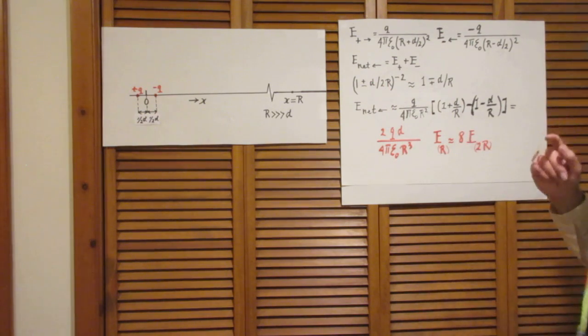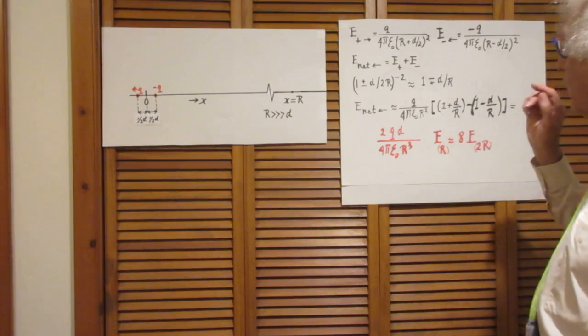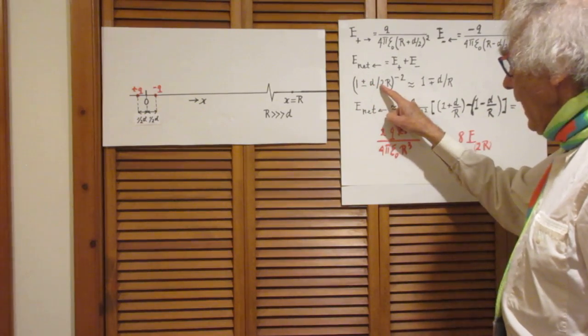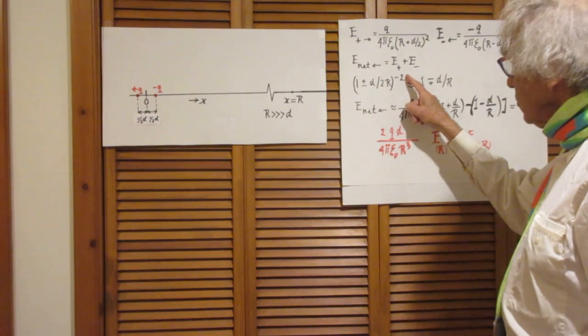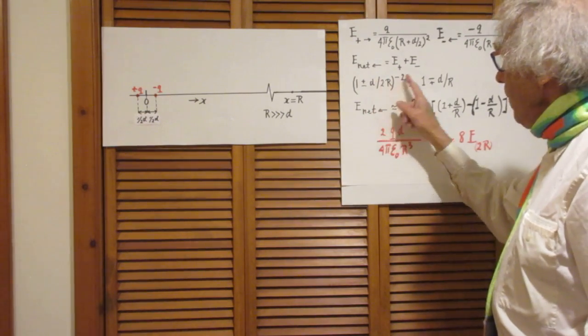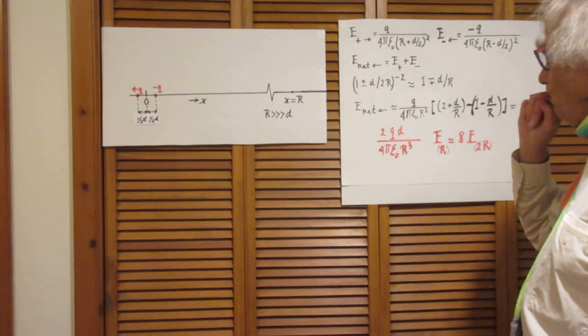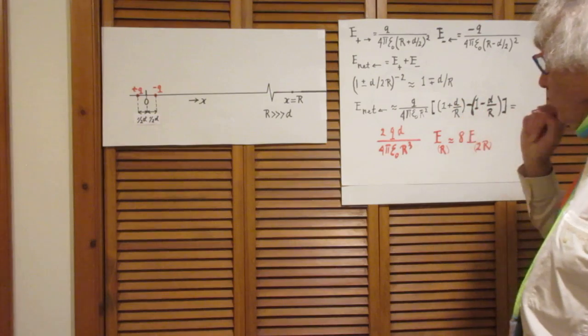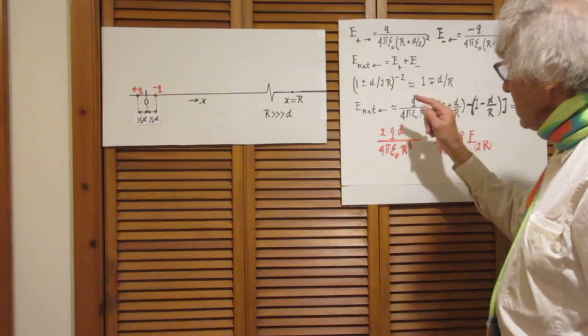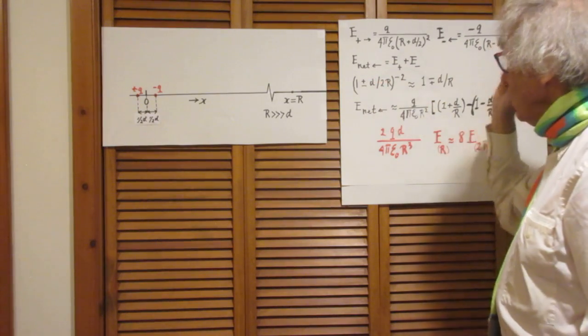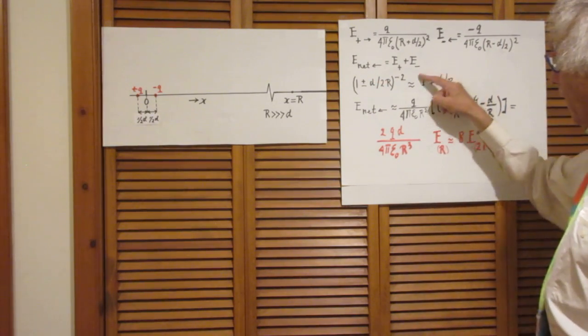And if you have a little bit of knowledge of algebra, you know that to a very high degree of accuracy, you can say, 1 plus x to the power minus 2, if x is way, way smaller than 1, is 1 minus 2x. And 1 minus x to the power minus 2, if x is way, way smaller than 1, is 1 plus 2x. And I've done that here.